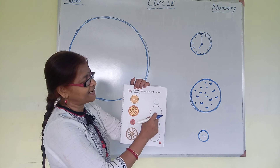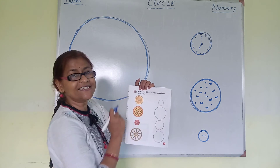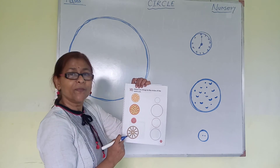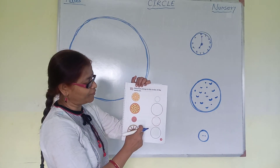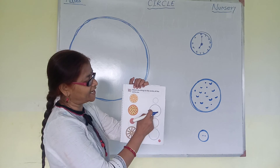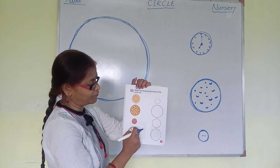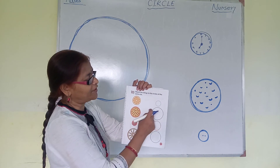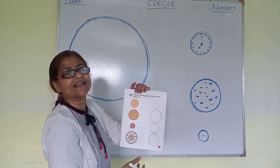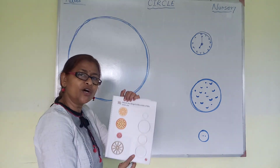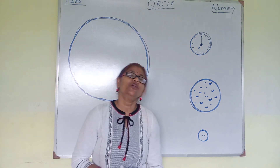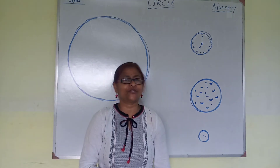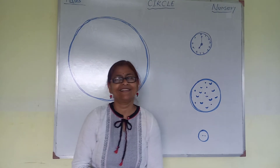This is a big circle, so we will go to the big circle. The green circle is the biggest, so we will go there to match the wheel with the circle. Understood? Do it at your home. Bye.